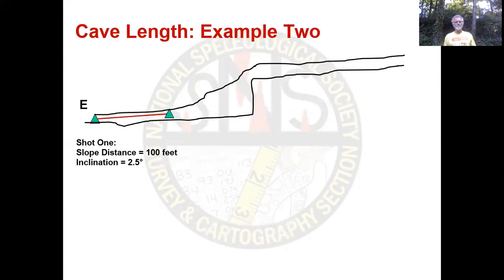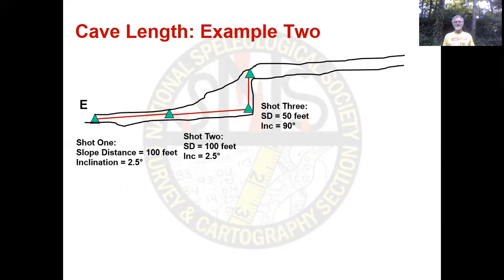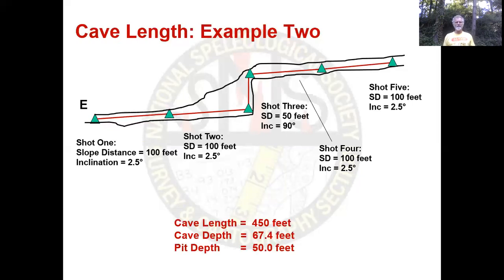Sample two. Again, a 100-foot shot at 2.5 degrees inclination. Shot two is identical. Shot three is straight up a pit or dome. Shot four and shot five are identical to the first two shots. So you've got four shots where the slope distance is 100 feet, and one shot where the slope distance is 50 feet, giving a cave length of 450 feet. Cave depth in this case is 67.4 feet, and the pit depth is 50 feet — it's slope distance.